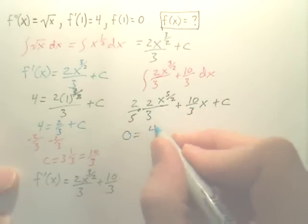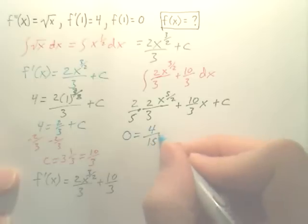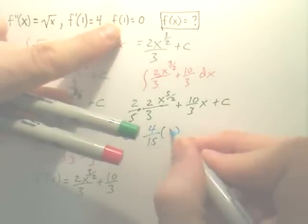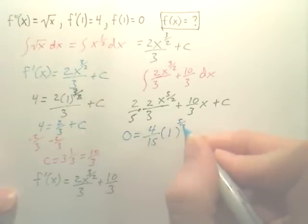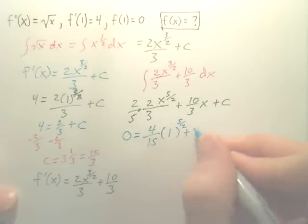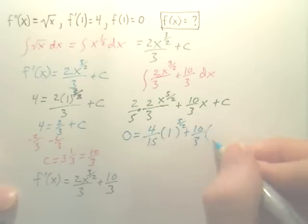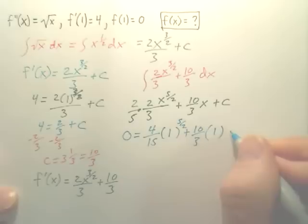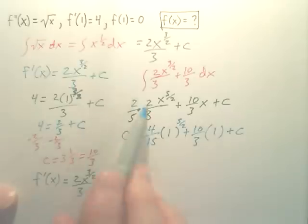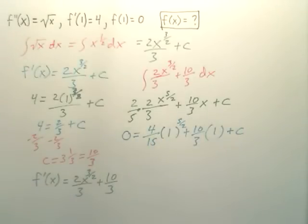x is one to the five over two, plus ten over three, and x again is one, plus c. Again, here my output is zero, my input is one. My output's one, my output's zero. If I solve this for c.